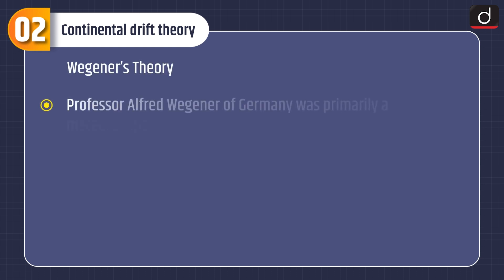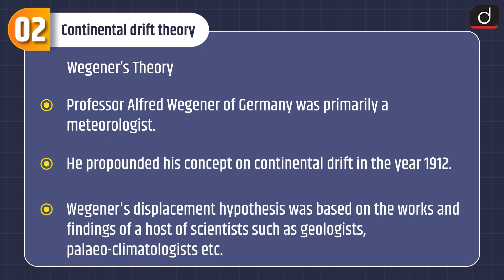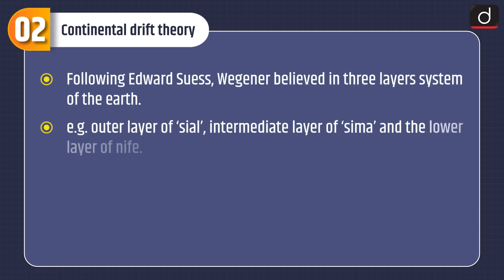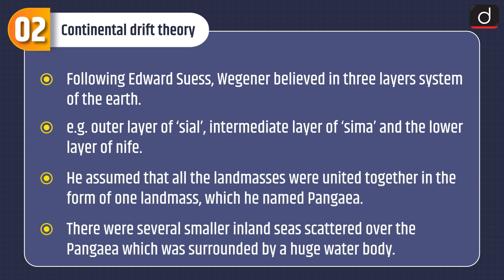Wegener's Theory: Professor Alfred Wegener of Germany was primarily a meteorologist. He propounded his concept of continental drift in the year 1912. Wegener's displacement hypothesis was based on the works and findings of a host of scientists such as geologists, paleoclimatologists, etc. Following Edwards, Wegener believed in a three-layer system of the earth: the outer layer of sial, the intermediate layer of sima, and the lower layer of nife. He assumed that all the land masses were united together in the form of one land mass, which he named Pangaea.